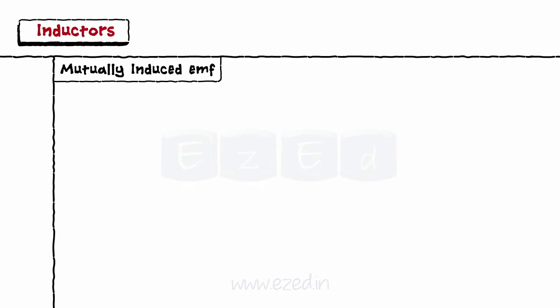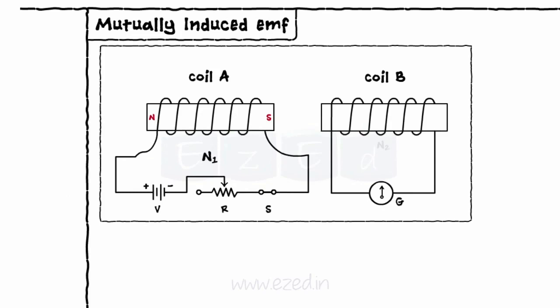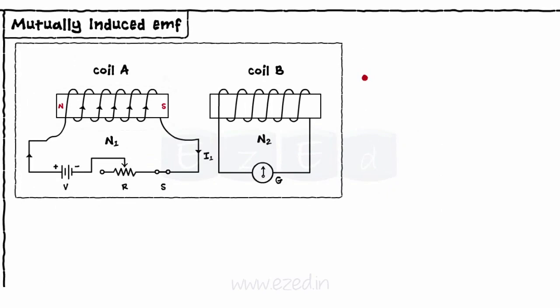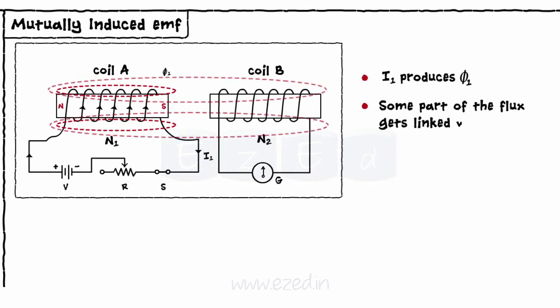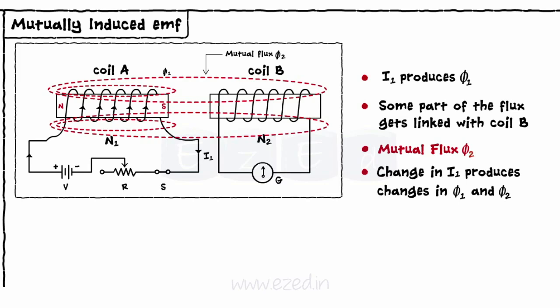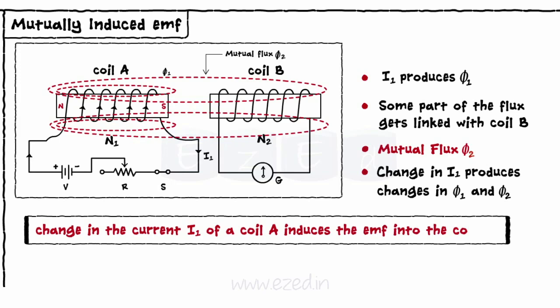The second type is mutually induced EMF. Consider two coils A and B having number of turns as N1 and N2 respectively. Let the current I1 flow through coil A and produce flux phi 1. Some part of the flux gets linked with coil B, which we call as mutual flux phi 2. If we change the magnitude of current I1, the linked fluxes phi 1 and phi 2 also change and EMF gets induced in the coils. Thus, the change in current I1 of coil A induces the EMF into coil B.